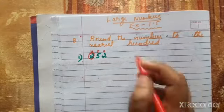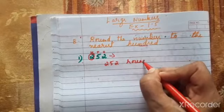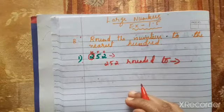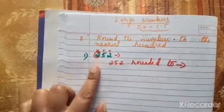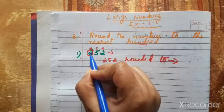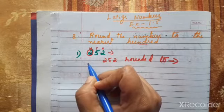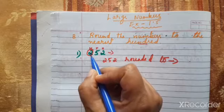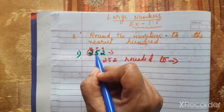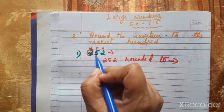So we are rounding off the hundreds place of 252. According to the poem, first find your place — hundreds place is marked. Now knock the door — look at the next digit. The next door digit is 5. Ask: do you have five or more than five? Yes, this digit is exactly five.